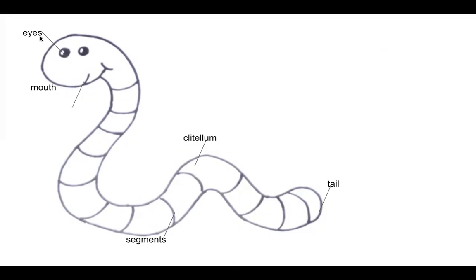Now here are the labels to help you label your worm. Here's the eyes, how the worm sees; the mouth, how the worm eats; the segments, how the worm moves; the clitellum, how the worm has babies; and the tail, the end of the worm.